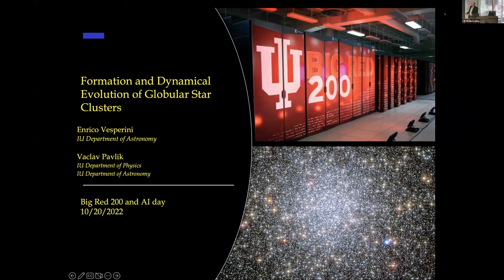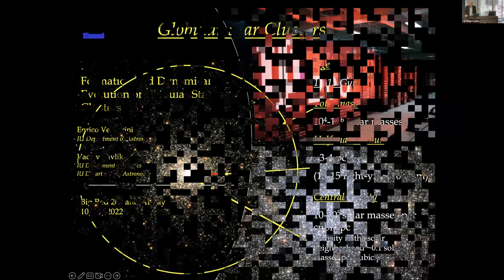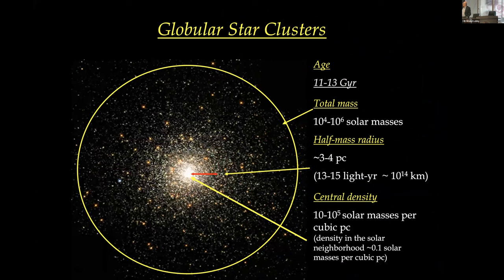What we do is formation and dynamical evolution of globular star clusters. What are globular star clusters? These stellar systems are among the oldest stellar systems in the universe with an age between 11 and 13 billion years. Total mass in these systems is between 10 to the 4 and 10 to the 6 solar masses. They are very compact, very small objects — 3 to 4 parsecs, or 13 to 15 light years, or 10 to the 14 kilometers.